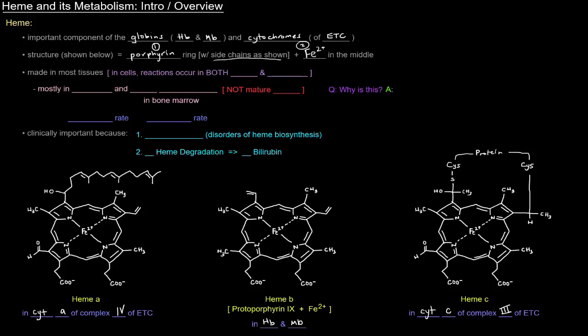Now heme is made in most tissues, but we mostly care about what's going on as far as its synthesis in the liver and the red blood cell precursors in the bone marrow. Notice I'm writing precursors here in all caps, and that's important. Liver and bone marrow.